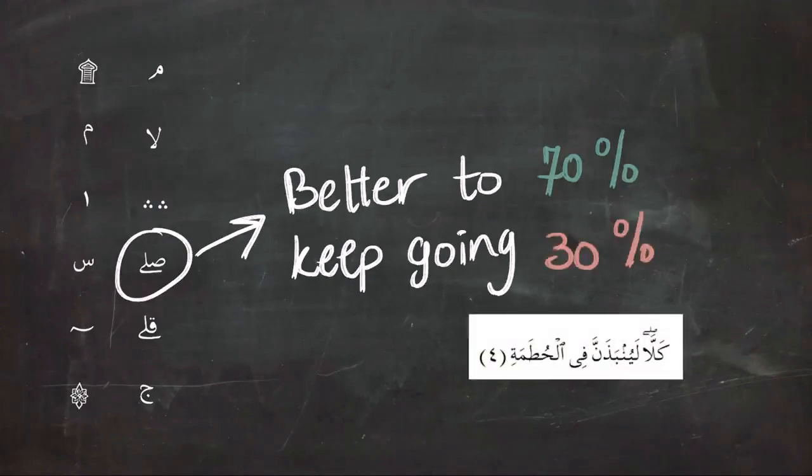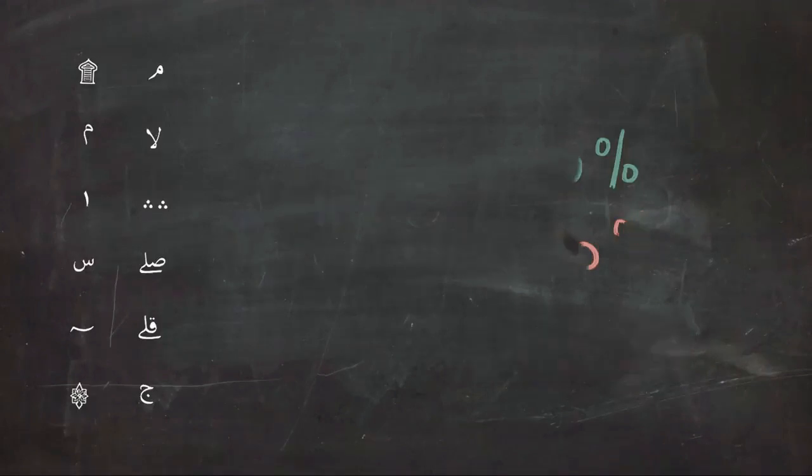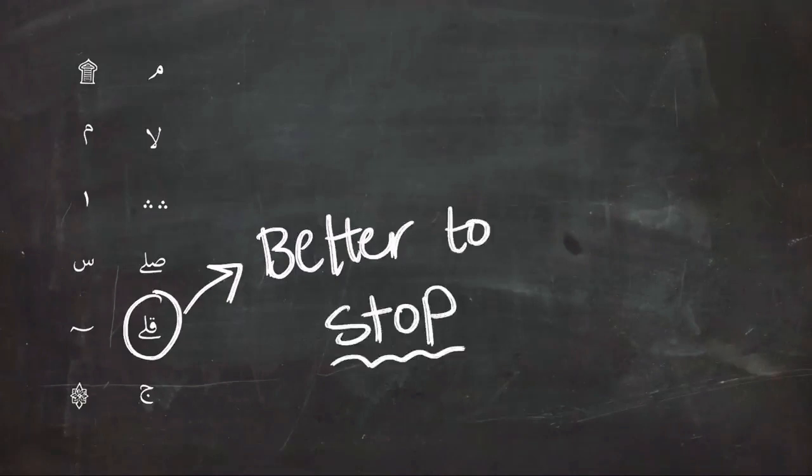Next is the symbol of kil, which is the exact opposite of sil, and it means it is better to stop. So 70 percent to stop, 30 percent to go, like the example.